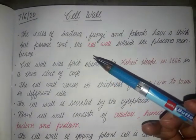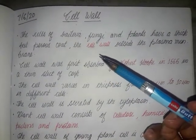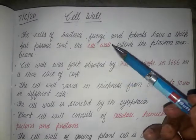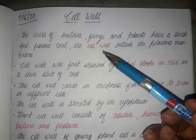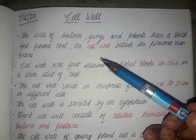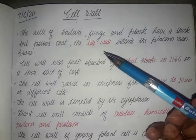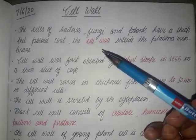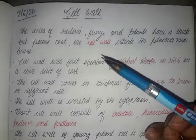The protective coat present outside the plasma membrane is known as the cell wall. The cell wall is very thick but porous — it is thick but also porous.